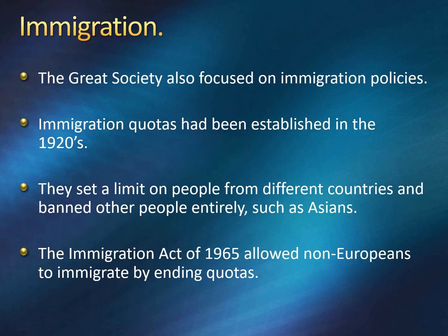The Great Society also focused on immigration policies. Immigration quotas had been established in the 1920s during the first Red Scare, setting limits on people from different countries and banning others entirely, such as Asians. The Immigration Act of 1965 allowed non-Europeans to emigrate by ending this quota system — so people from Asian nations, African nations, and Latin American nations would be able to come to the country again.